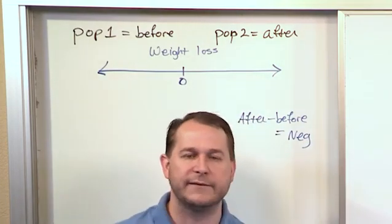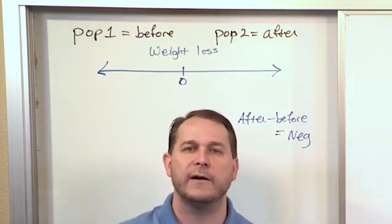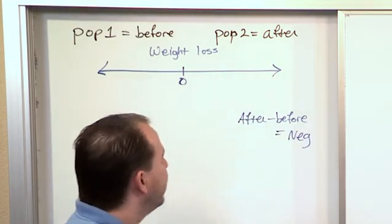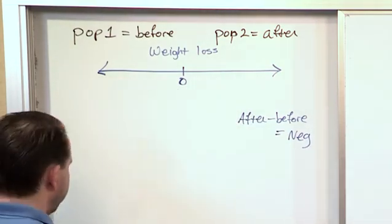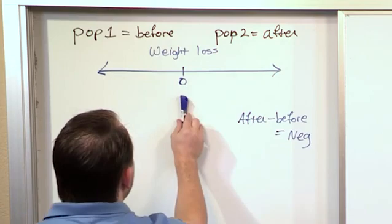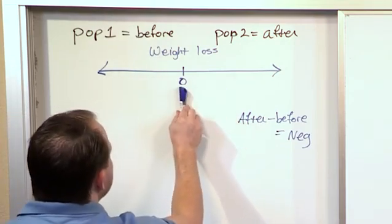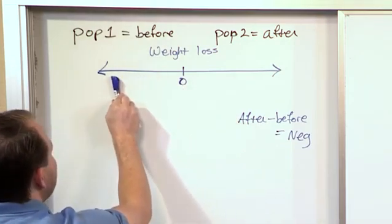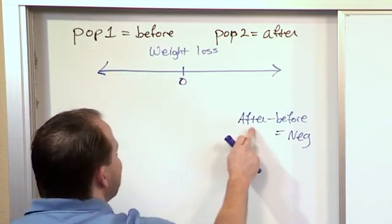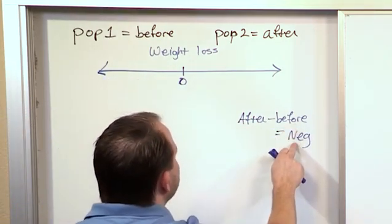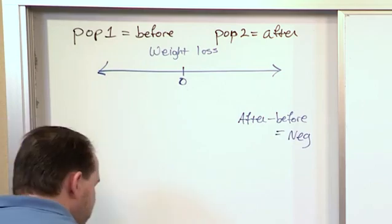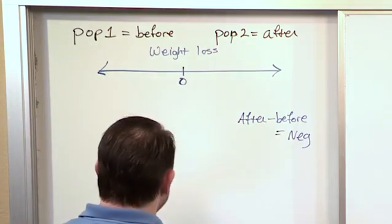And that's just set up the way that we've calculated here. After minus before, after number is smaller. So if this graph represents weight loss and you want to lose weight, where do you want to be on this graph? Well, you want to be in the negative region over here to the left of zero, because that means that your after weight was lower than your before weight and you were negative.